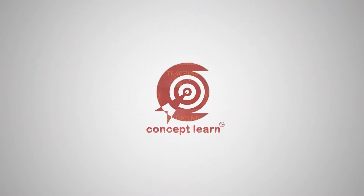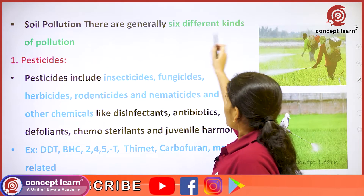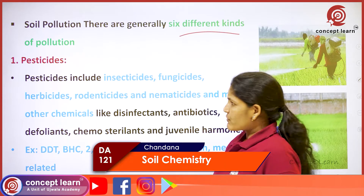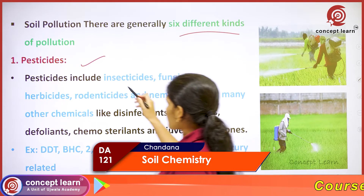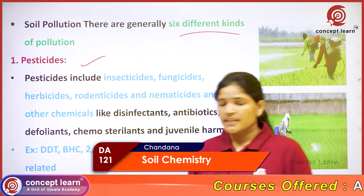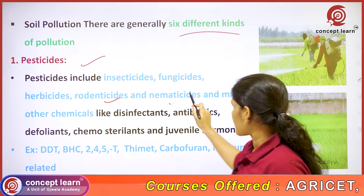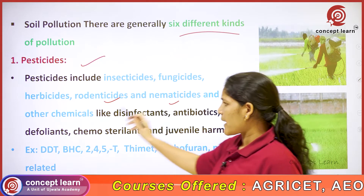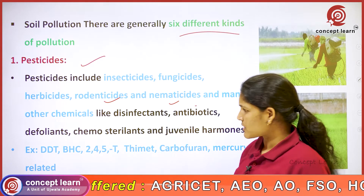Welcome to Concept Learn. Next is soil pollution. There are generally six different kinds of soil pollution. First is pesticides. Pesticides include insecticides, fungicides, herbicides, rodenticides, nematicides, and other chemicals like disinfectants and antibiotics.